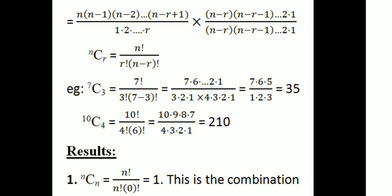For example, 7C3 = 7 factorial divided by 3 factorial into 4 factorial = (7 into 6 into 5 into 4 into 3 into 2 into 1) divided by (3 into 2 into 1) into (4 into 3 into 2 into 1). Simplifying: 7 into 6 into 5 divided by 1 into 2 into 3 equals 35. Also, 10C4 = 10 factorial divided by 4 factorial into 6 factorial; canceling gives 10 into 9 into 8 into 7 divided by 4 into 3 into 2 into 1 = 210.